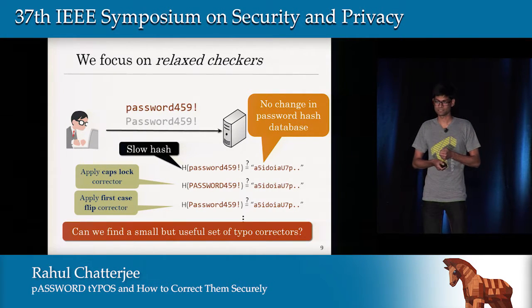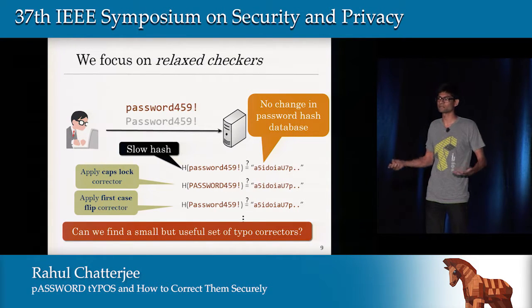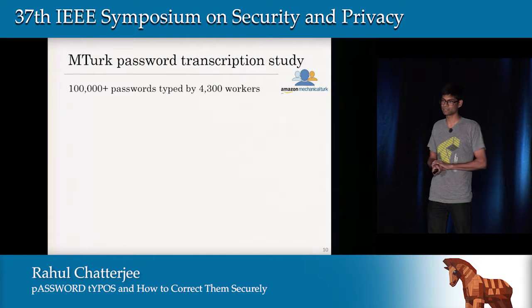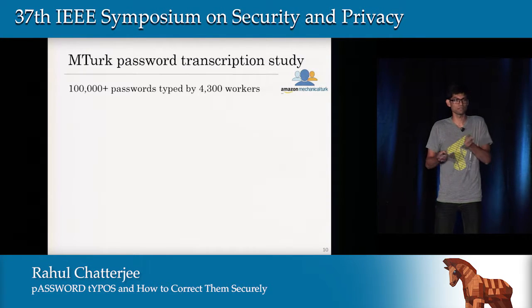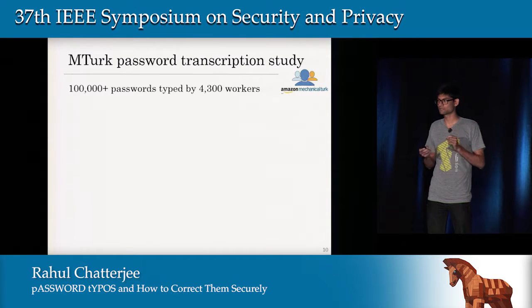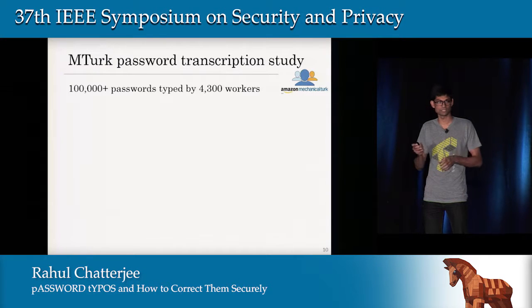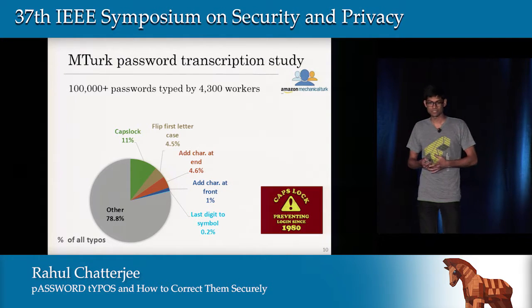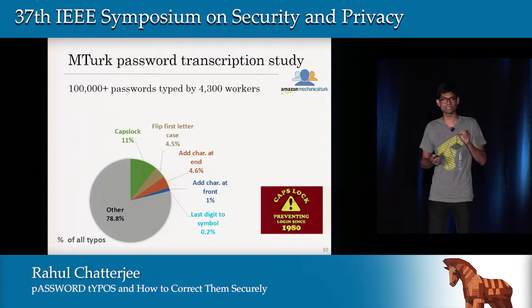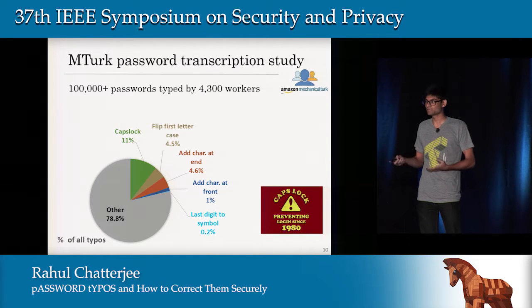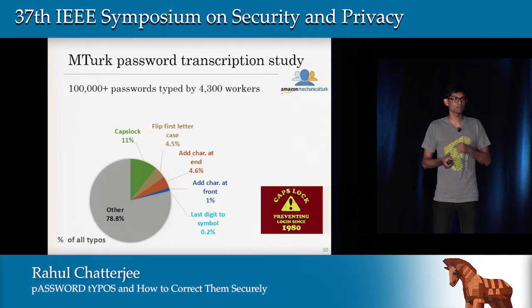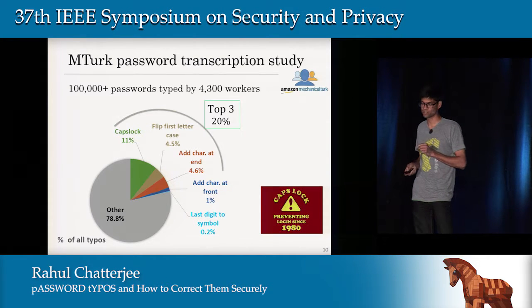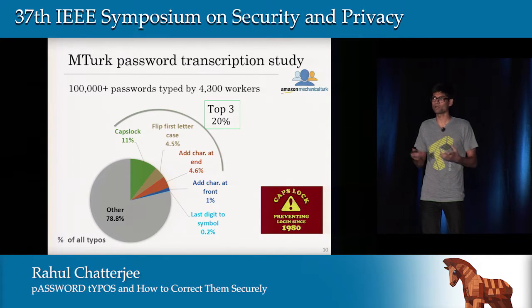To find these popular or frequent typos, we did a study with Amazon Mechanical Turk, where we asked workers to transcribe real passwords. We collected password transcription data of more than 100,000 passwords from 4,300 workers across the globe. By analyzing the typos the workers made, we found a few very popular ones: accidentally pressing the caps lock key, adding an extraneous character to the end of your password, or flipping the case of the first letter. These top three typos comprise 20% of all typos that users make.